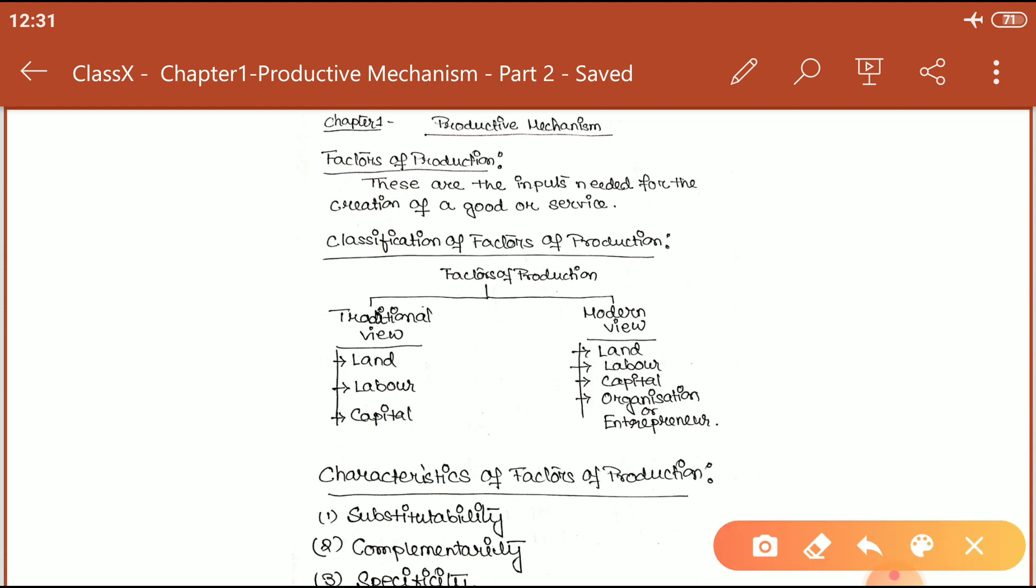The factors of production are one of the main important parts of economics. This economic term means the inputs that are used in the production of goods and services in order to make economic profit.